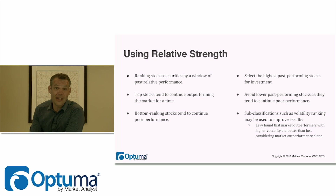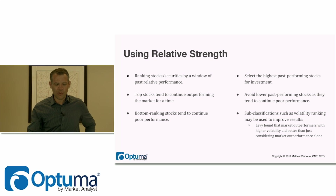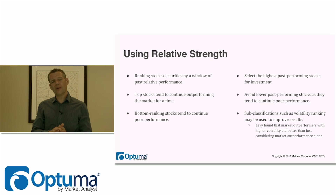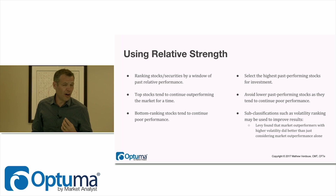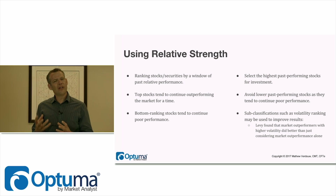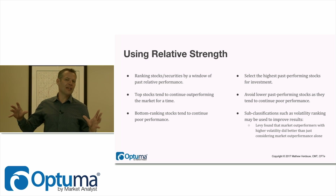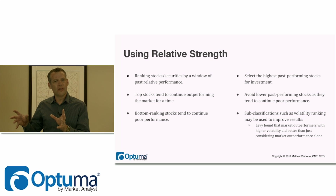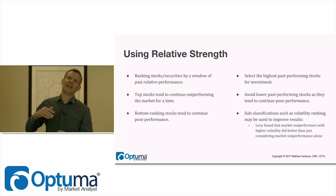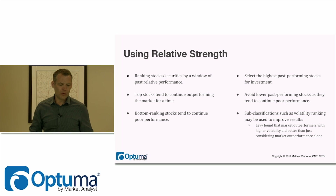Select the highest past-performing stocks for investment and avoid lower past-performing stocks as they tend to continue their poor performance. Subclassifications also improve results. Levy did some research and found that not only taking the outperformers, but taking outperformers that had higher volatility, led to better results than just taking the outperformers on their own. This is a big part of why you do the CMT and learn technical analysis — asking whether layering on a volatility study improves results. We do this layered approach as we build models.